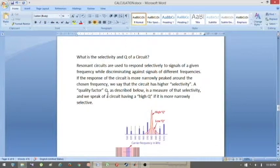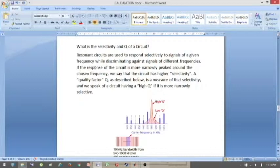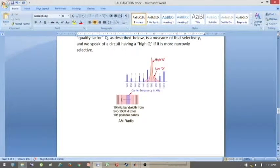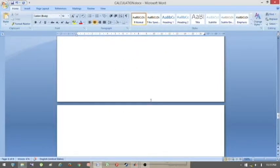What is the selectivity of Q? Resonance circuits are used to respond selectively to signals of a given frequency while discriminating against signals of different frequencies. If the response of the circuit is more narrowly peaked around the chosen frequency, we say that the circuit has higher selectivity. A quality factor, Q, is a measure of the selectivity and we speak of a circuit having a high Q if it is more narrowly selective. If you look at this diagram, high Q makes lower bandwidth. High Q has lower bandwidth and low Q has large area of bandwidth. This application can be found in radios, like for example, if you are an engineer with an oscilloscope.